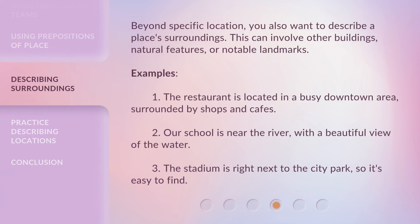Beyond specific location, you also want to describe a place's surroundings. This can involve other buildings, natural features, or notable landmarks. Examples: 1. The restaurant is located in a busy downtown area, surrounded by shops and cafes. 2. Our school is near the river, with a beautiful view of the water. 3. The stadium is right next to the city park, so it's easy to find.